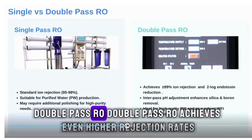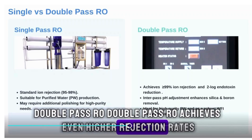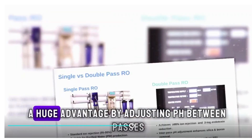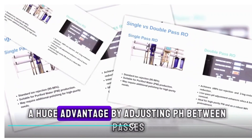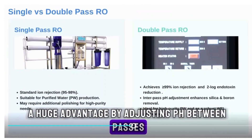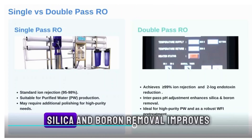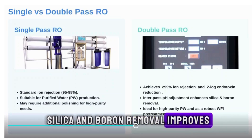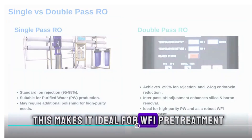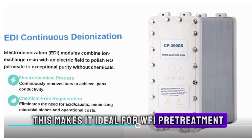Double-pass RO achieves even higher rejection rates. It can reduce endotoxins by two logs — a huge advantage. By adjusting pH between passes, silica and boron removal improves. This makes it ideal for WFI pre-treatment.